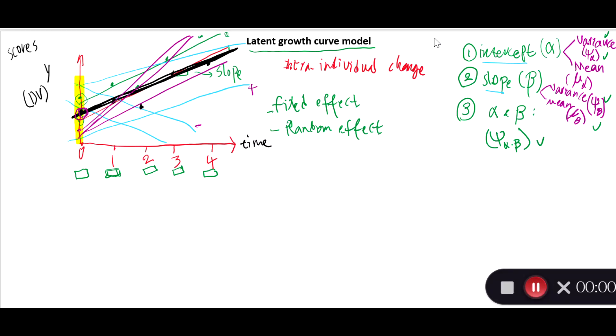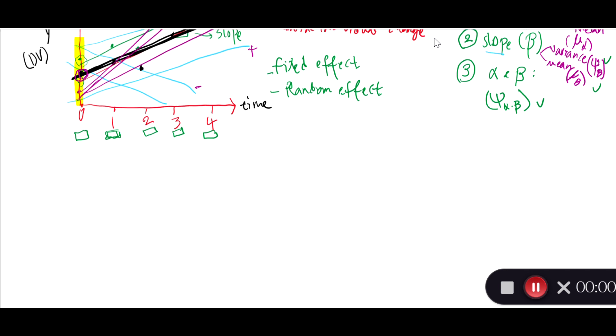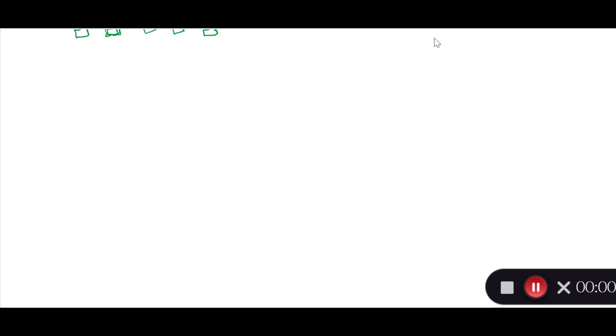Let's assume that we want to do a confirmatory factor analysis on these five items. How do we do that? Well, basically, the idea is pretty straightforward. Let me redraw these items here. So, item 1, item 2, or measurement 1, 2, 3, 4, and 5 over time.